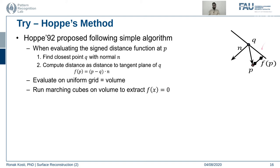Here is an example: p is the point for which we want to find the signed distance function; we consider the closest point q and its associated normal, and the tangent plane passing through q. We compute this value as the signed distance function for p. We run this algorithm across all points in a uniform volume grid and then run the marching cubes algorithm to extract all the iso surfaces, generating surface reconstructions from the set of point clouds.